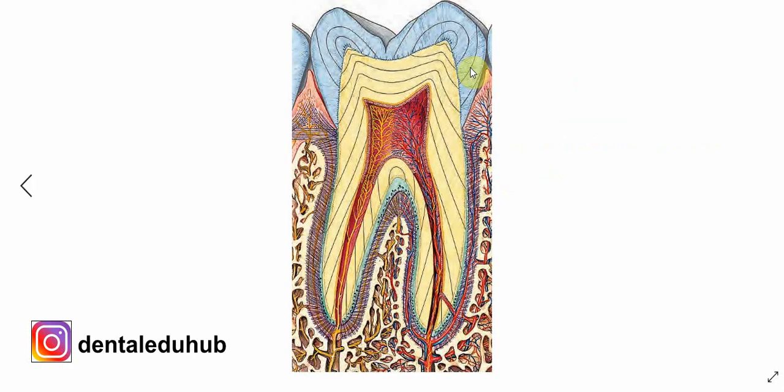Now let's discuss the tissues of the human tooth. The human tooth comprises of four tissues. This is a diagram showing the longitudinal section of a human molar.